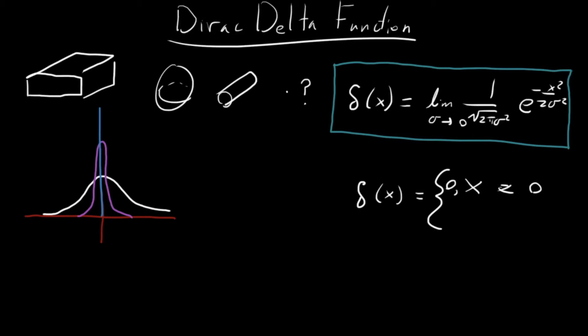Likewise, we can say that delta of x is equal to zero everywhere where the particle isn't. Well, where it is, what happens? In order for this thing to be integrated to one, or for this Gaussian to be normalized, if it becomes infinitely thin, it's got to become infinitely tall. So at x equals zero, the delta function blows up to infinity.